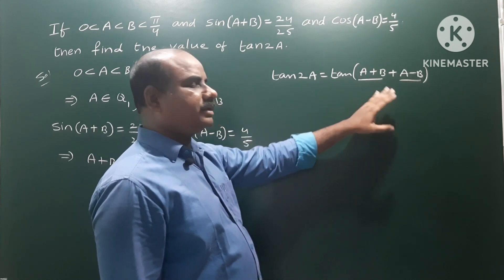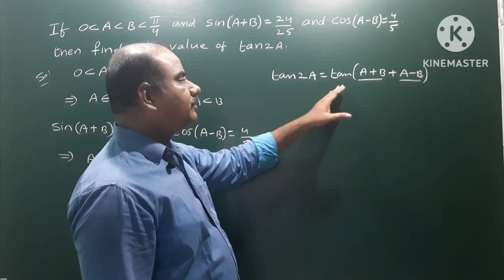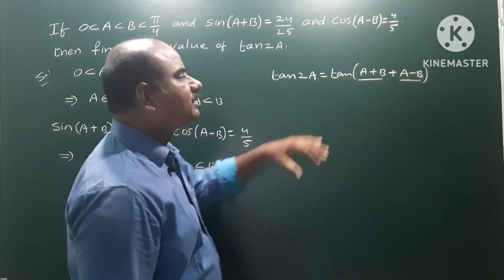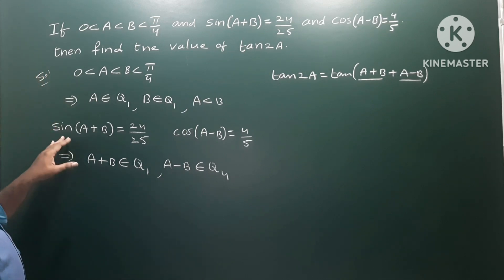Using the tan(P+Q) formula: tan(P+Q) = (tan P + tan Q)/(1 - tan P tan Q). That means we need the values of tan(A+B) and tan(A-B). To find those values, we have sin(A+B) and cos(A-B).